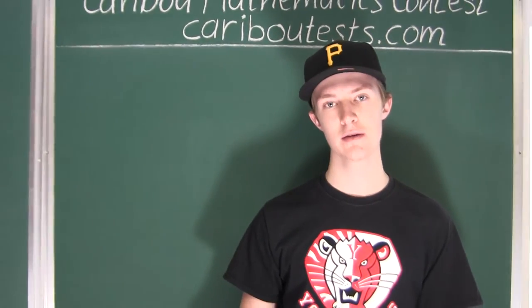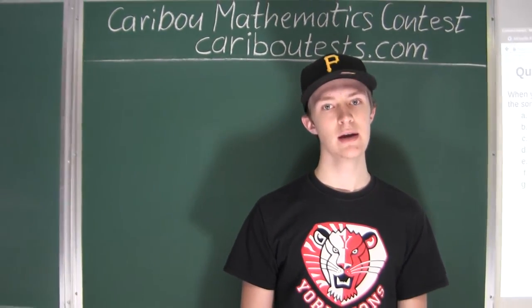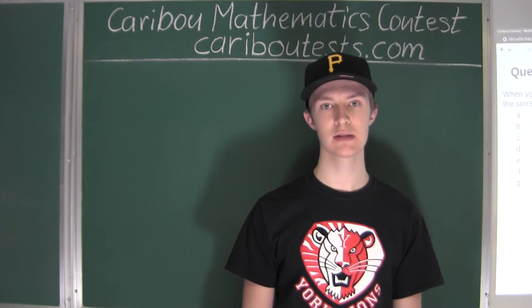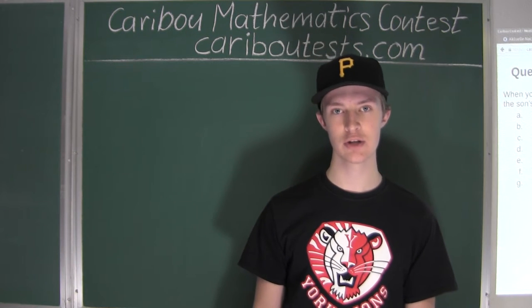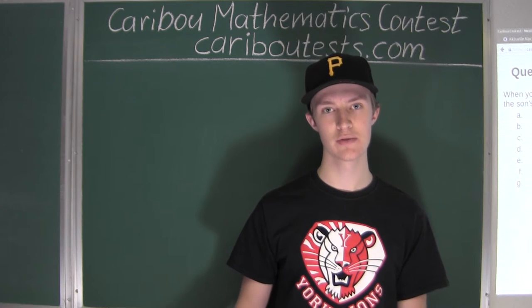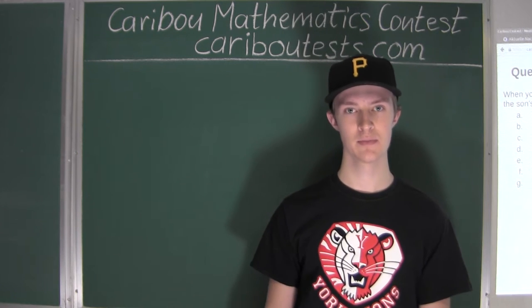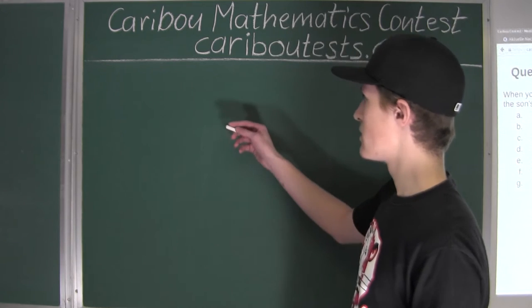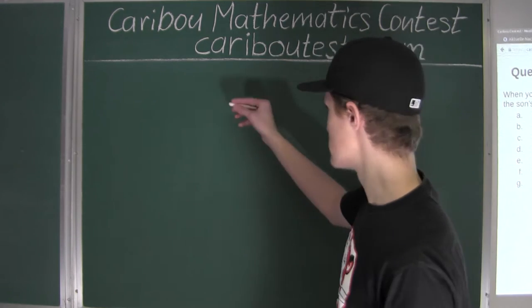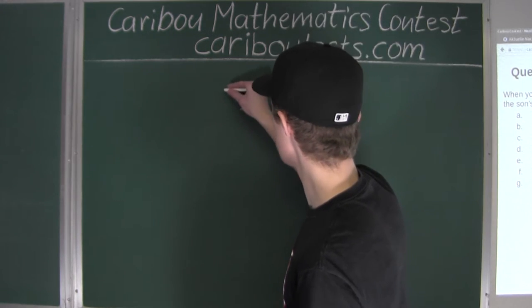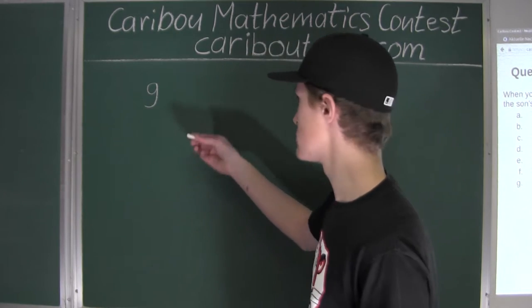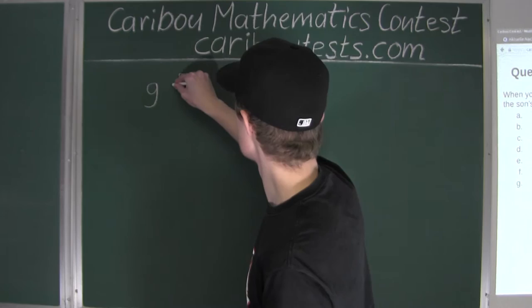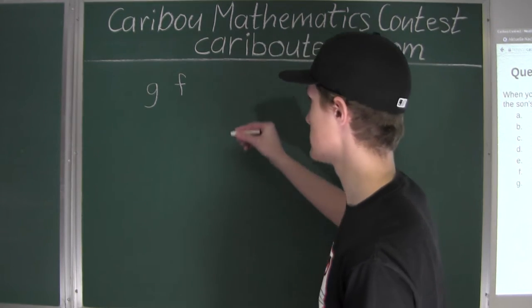What we want to find out is the grandfather's age, the father's age, and the son's age. From the question, we are given three statements. The easiest way to collect this information would be to introduce variables. We will use G for the grandfather's age, F for the father's age, and S for the son's age.